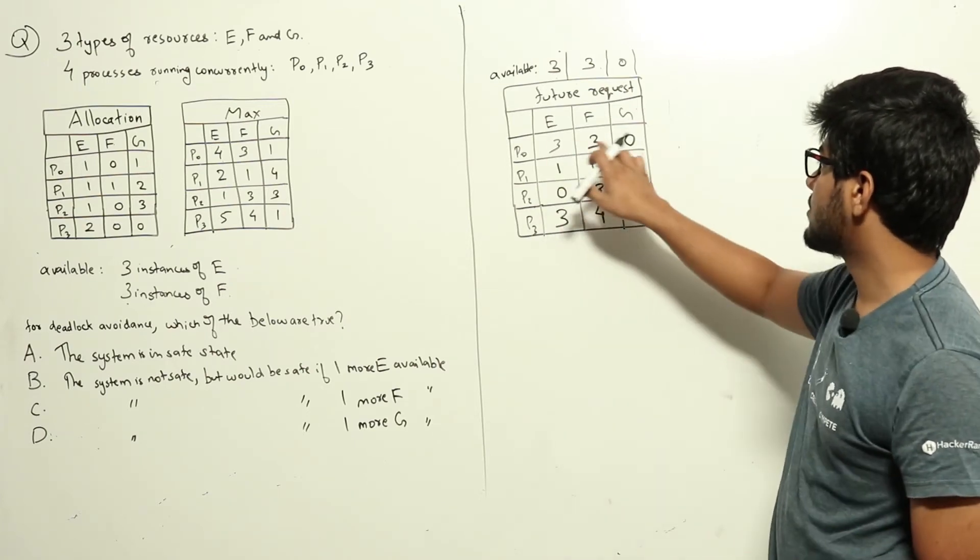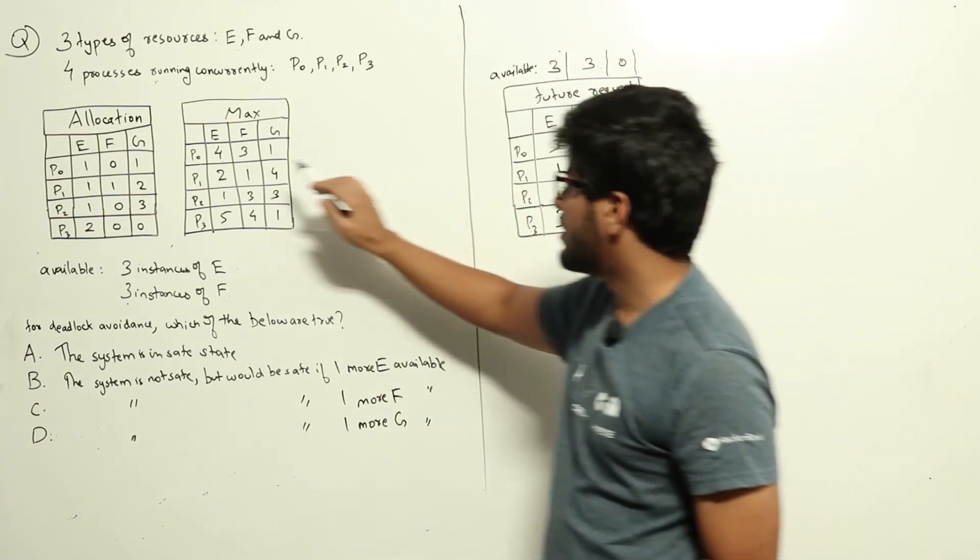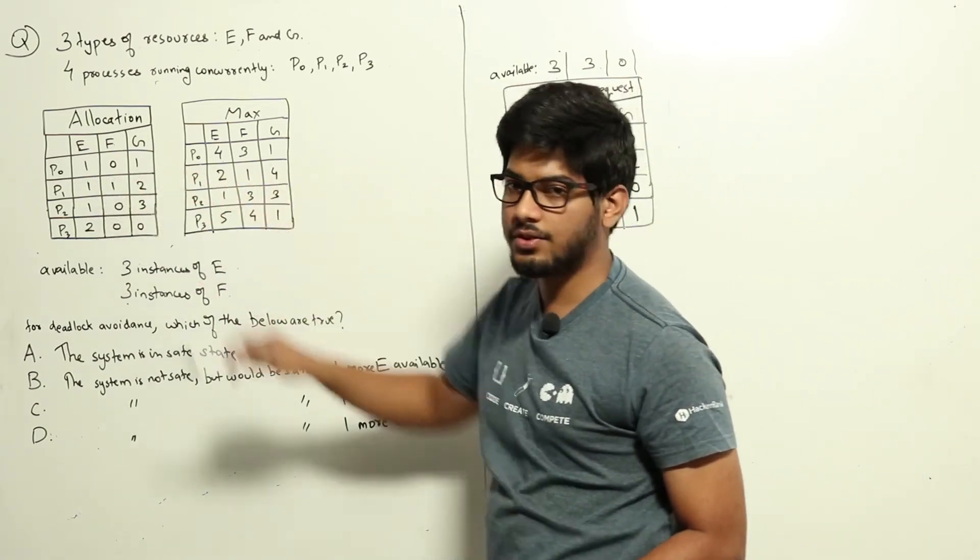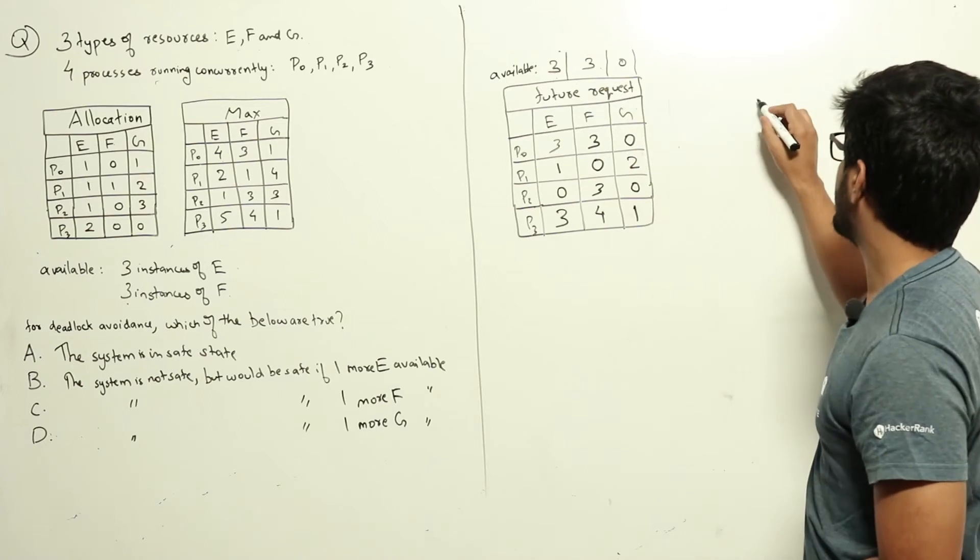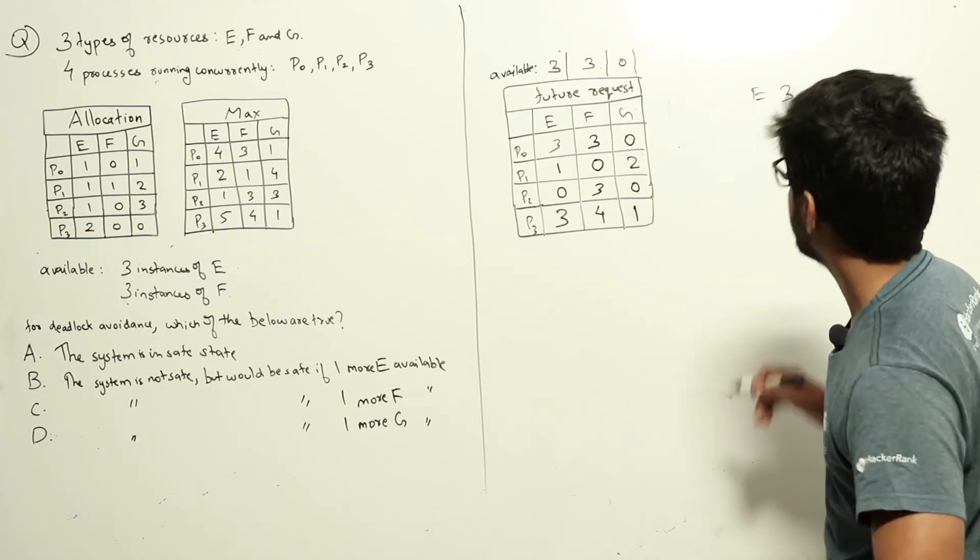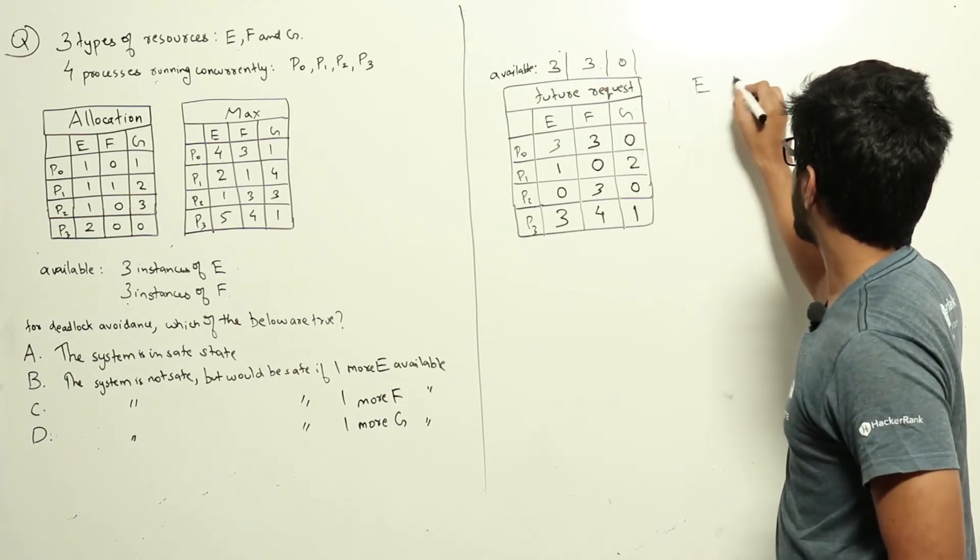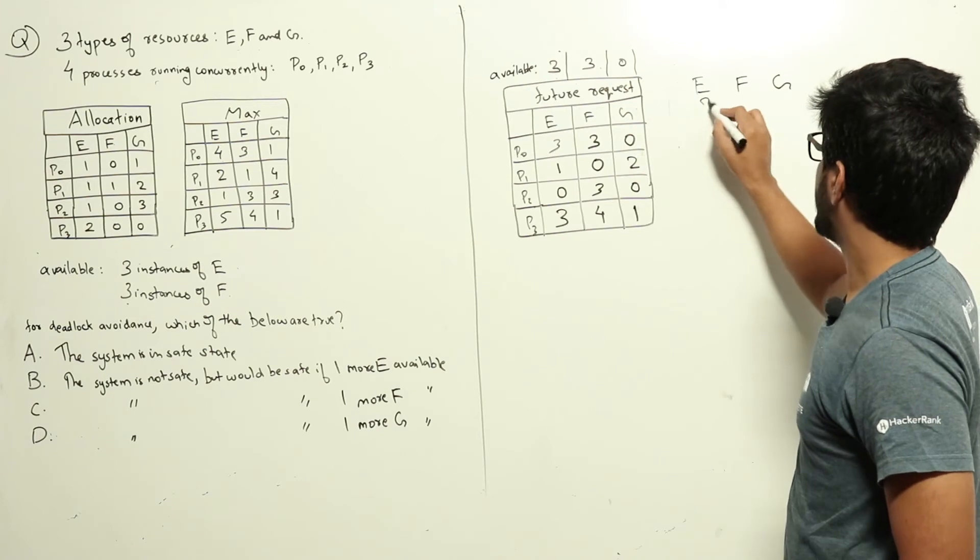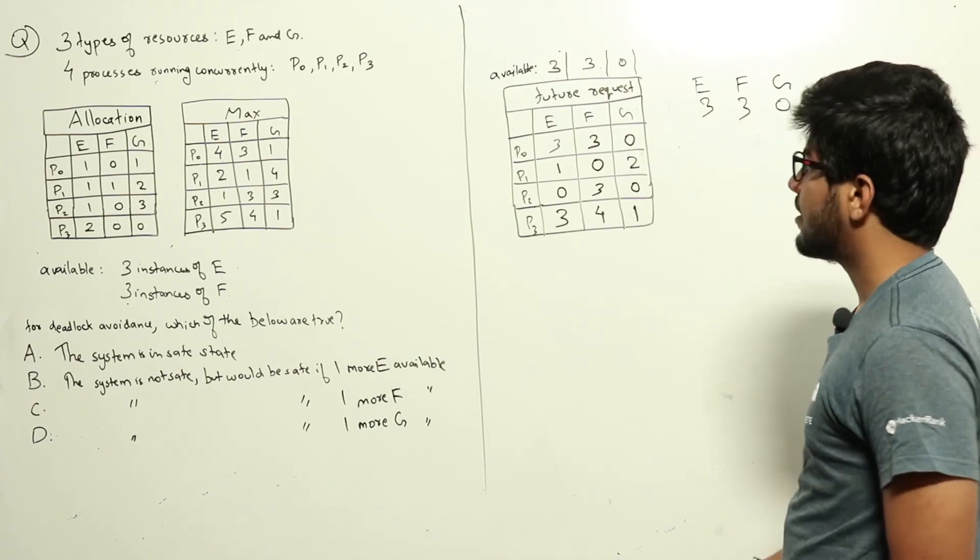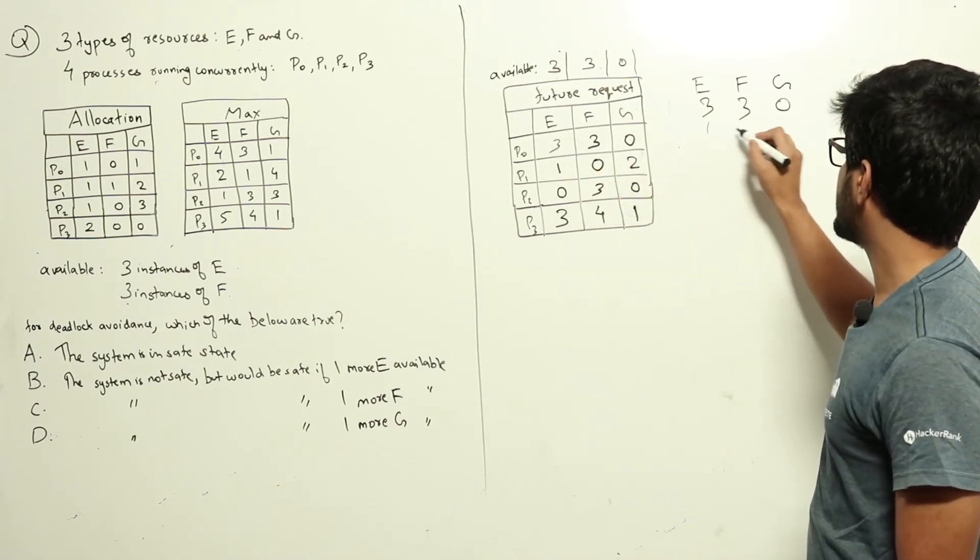Let us say P0 is requesting these and P0 runs. After P0 runs, it will release what it currently has as well. We had three, three, and zero available. After P0 runs, it will release what it currently has, which is one, zero, and one.